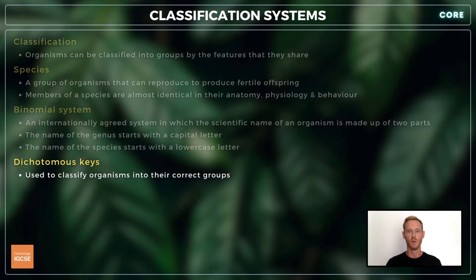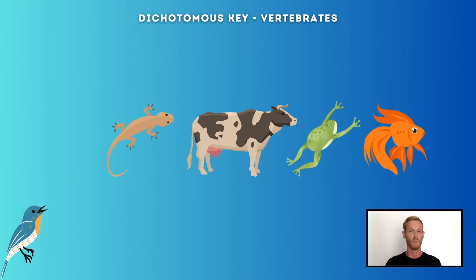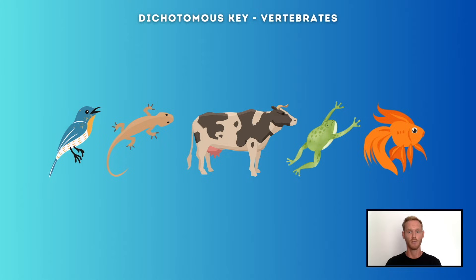In order to classify or group an unfamiliar organism, dichotomous keys are used. By following the key and making suitable choices along the way, it's possible to identify the organism correctly. You need to be able to interpret and make simple dichotomous keys based on easily identifiable features. Let's work through one for the different classes of vertebrates, or the animals that possess a backbone: birds, reptiles, mammals, amphibians and fish.